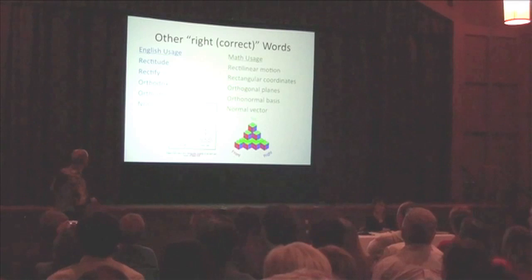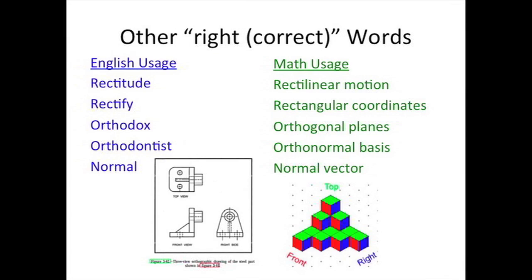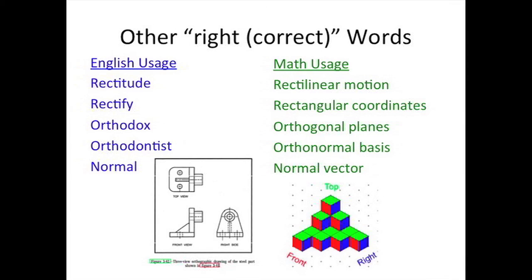And so that's leaning. So what about a right angle — what's right about a right angle? Here's some English usage: rectitude, right, orthodox meaning to practice religion correctly, orthodontist meaning to fix your teeth.